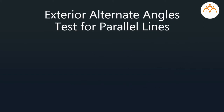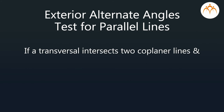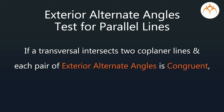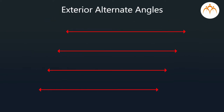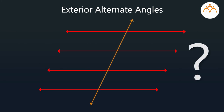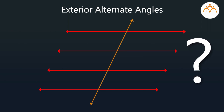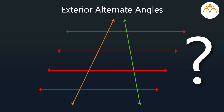So, that brings us to a conclusion that if a transversal intersects two coplanar lines and each pair of exterior alternate angles is congruent, then those two lines are parallel. Well, if we have more than two parallel lines intersected by a transversal, how many pairs of exterior alternate angles will be formed? Will these pairs also be of congruent angles? And what if we have more than two parallel lines intersected by more than one transversal? Try it out.